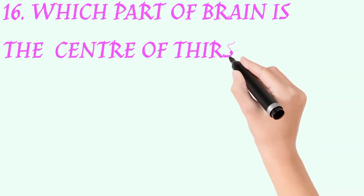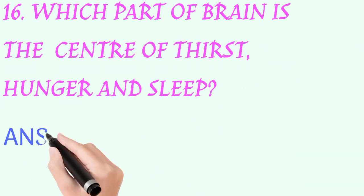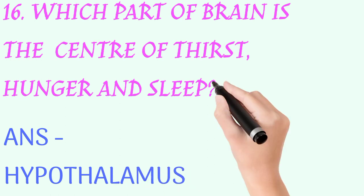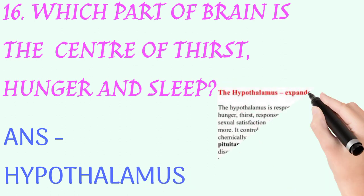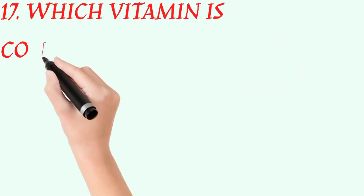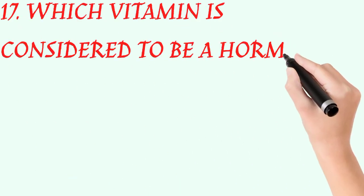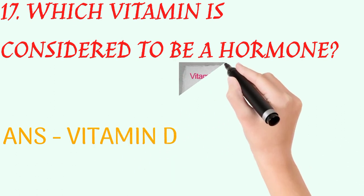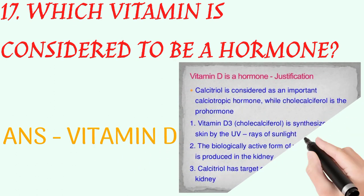Which part of the brain is the center of thirst, hunger, and sleep? Answer: hypothalamus. Which vitamin is considered to be a hormone? Answer: vitamin D.